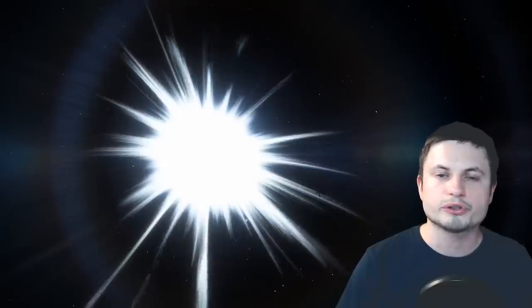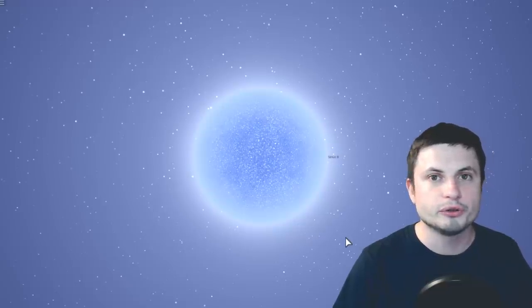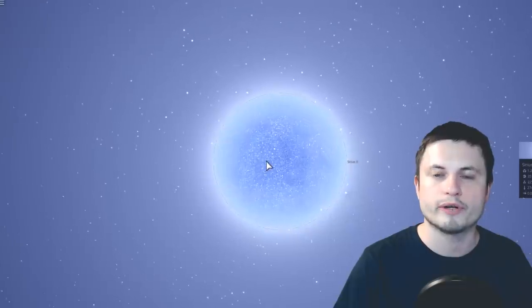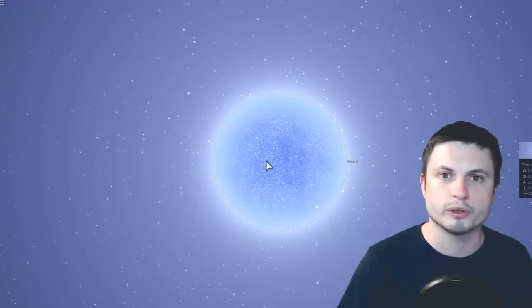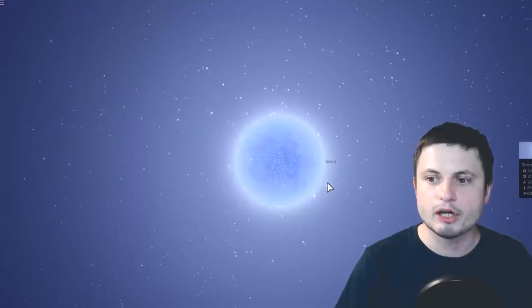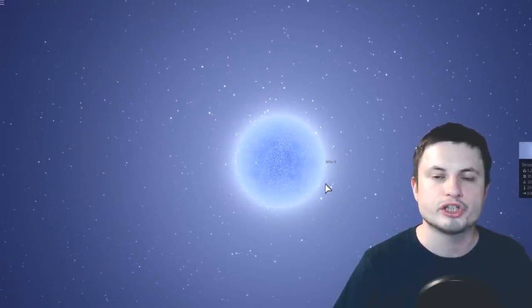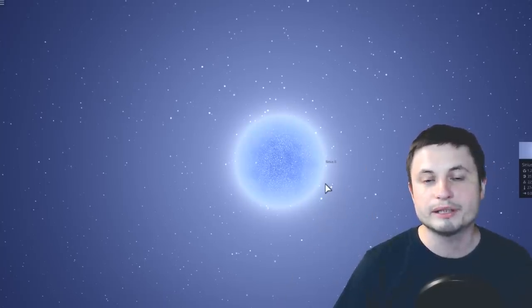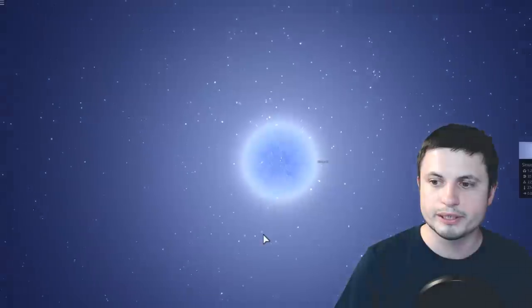So first of all we need to start with the event that our own sun is going to undergo one day when it's going to become this type of an object known as a white dwarf. This is the closest white dwarf to us known as Sirius B. Now these objects have what's known as Chandrasekhar limit. There's a video above my head that may explain a little bit more about this but in short what this refers to is this.